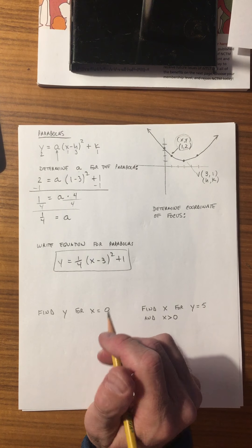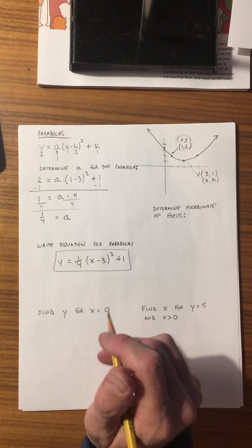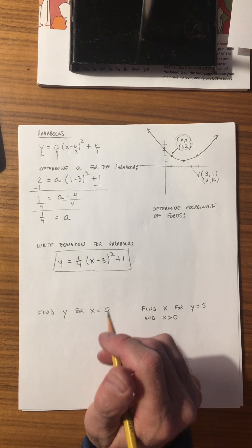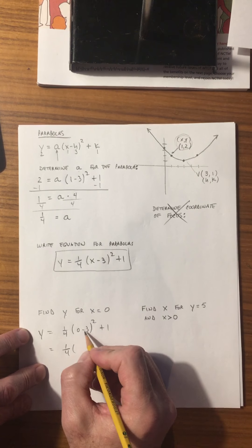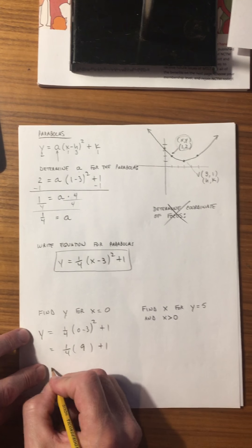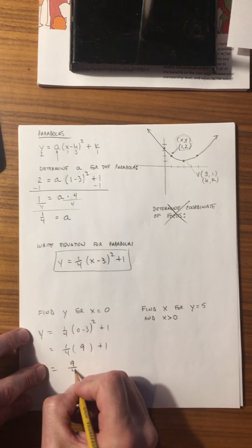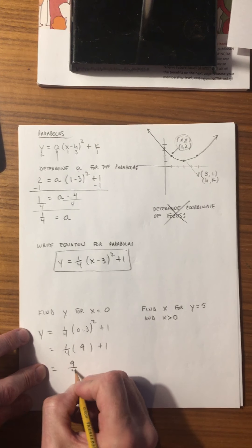Let's use this equation to find the y value when x equals 0 — essentially finding the y-intercept. So y equals 1 quarter times (0 minus 3) squared plus 1. Negative 3 squared is 9. We have 9 quarters plus 1, which is 9 divided by 4 plus 1 equals 3.25. So 3.25 is the y-intercept.